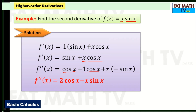We applied the product rule twice: first when taking the first derivative, and again because the first derivative contained the product x·cos(x), requiring another application of the product rule.